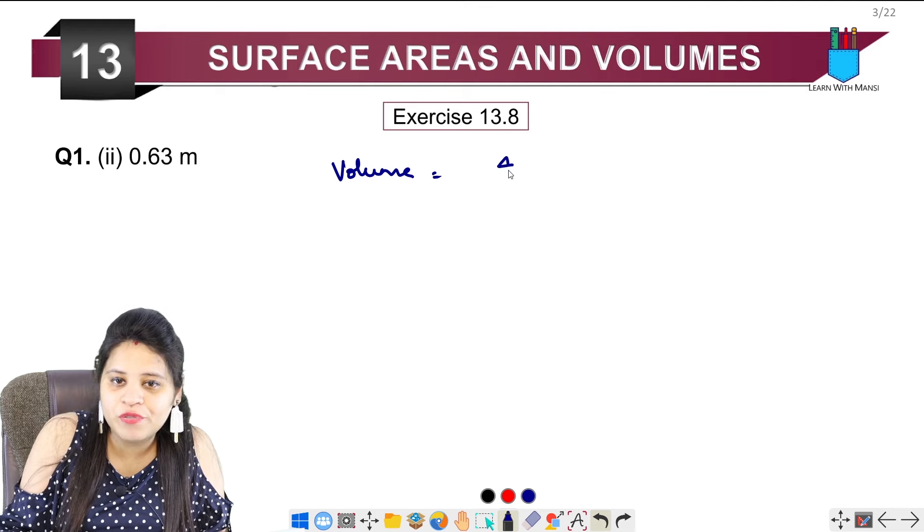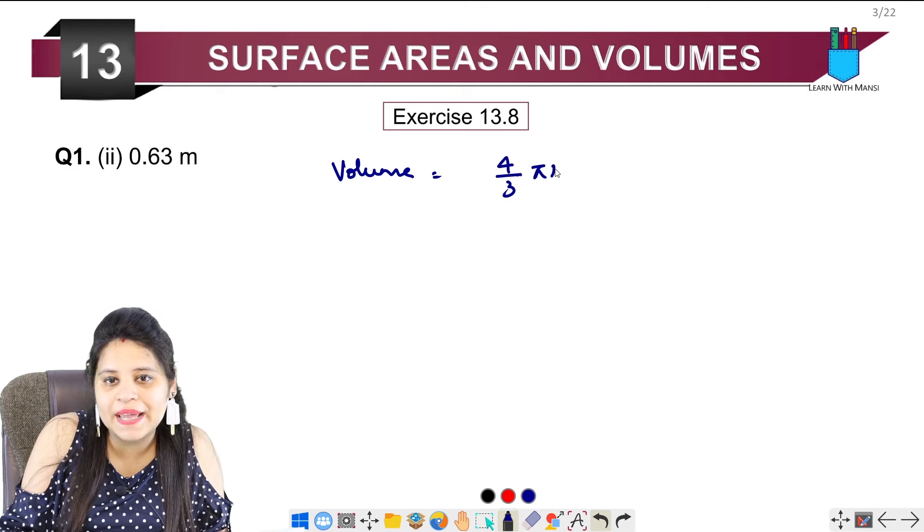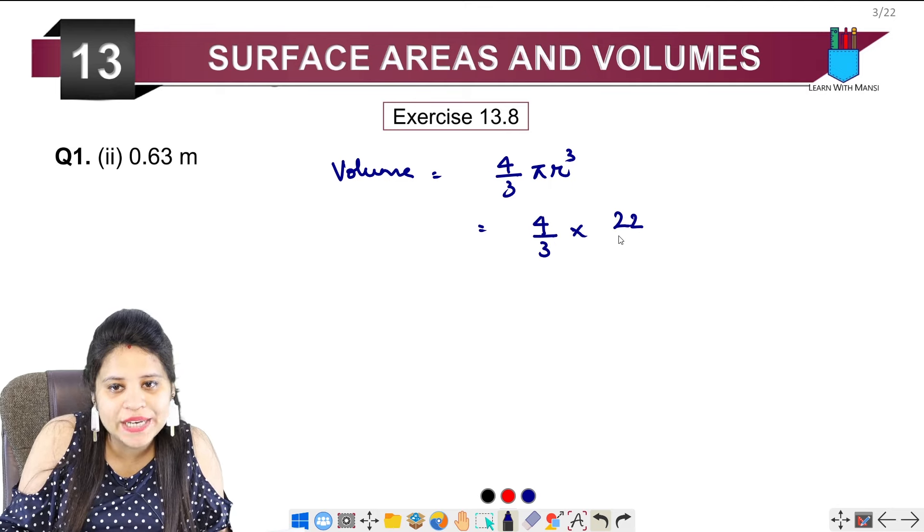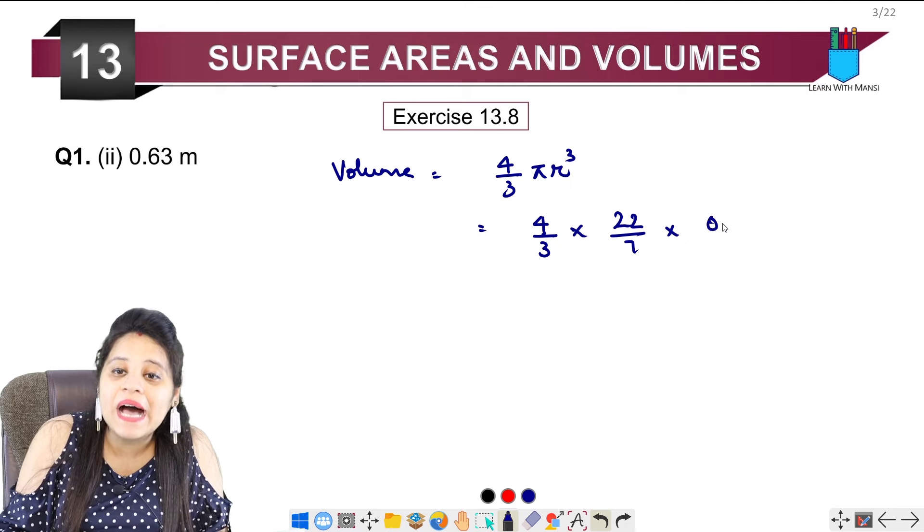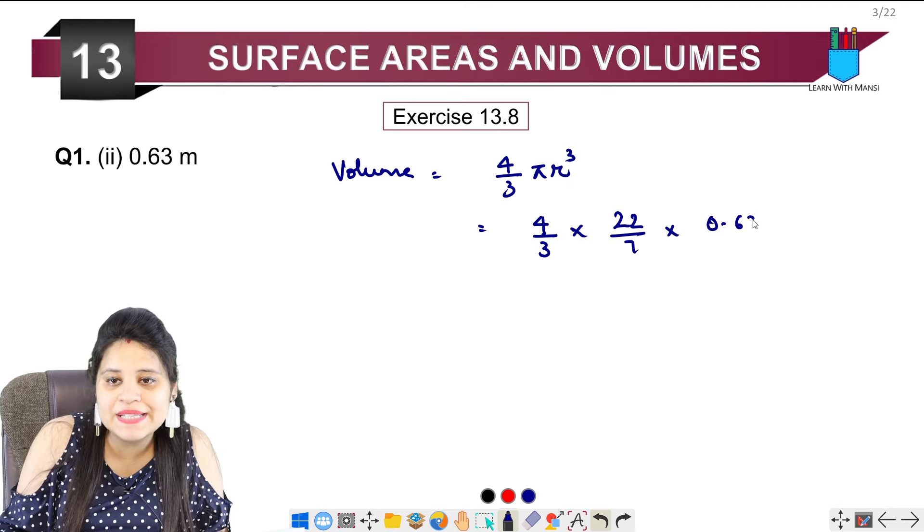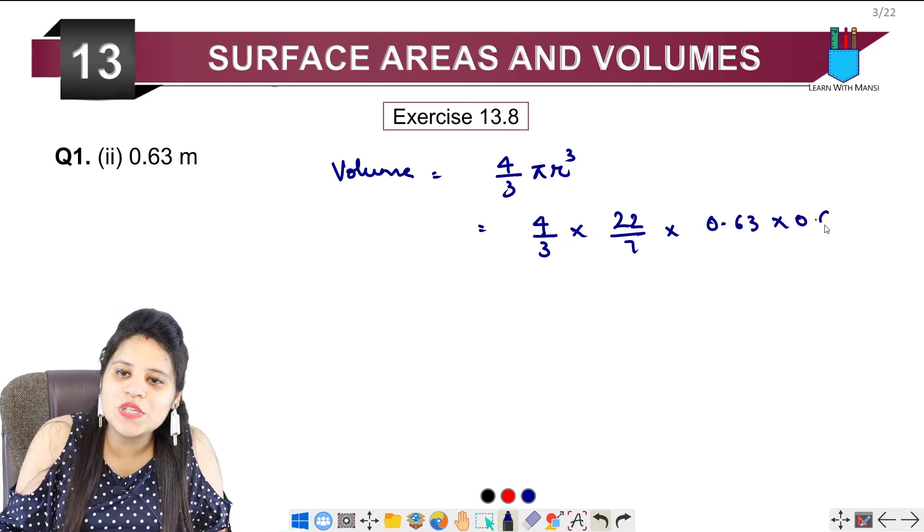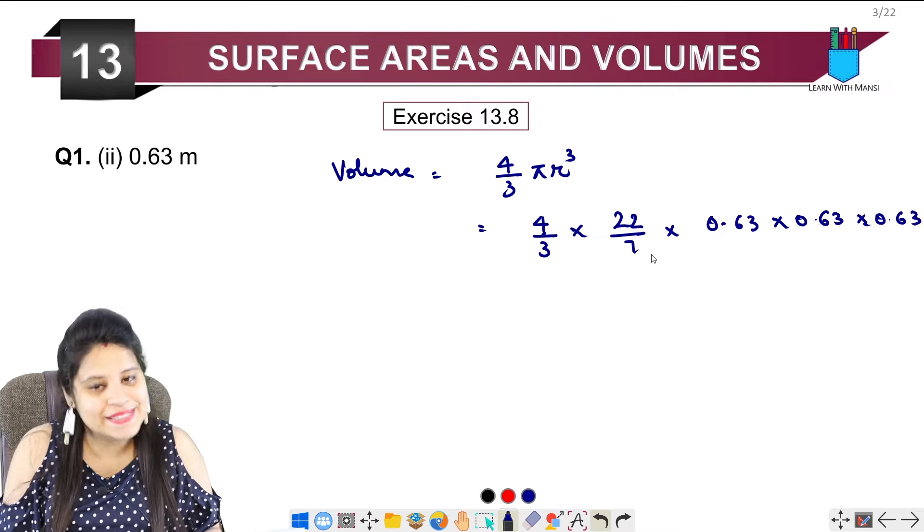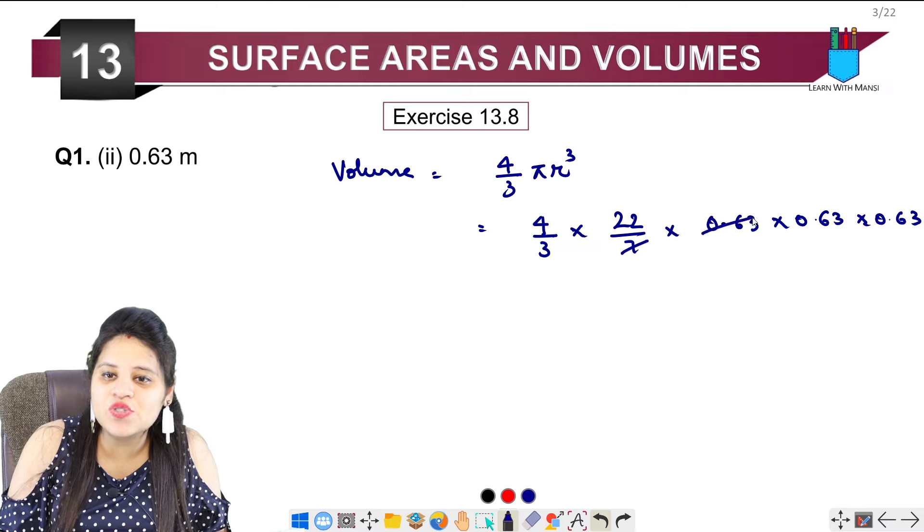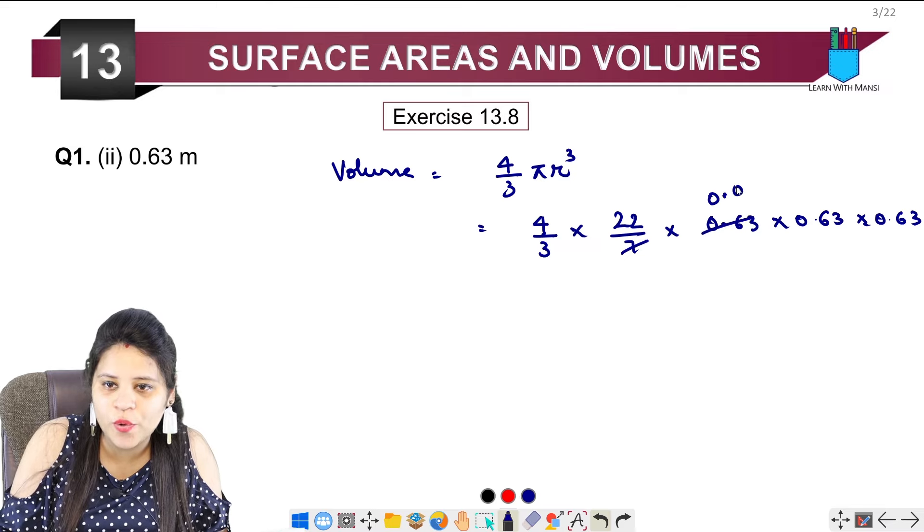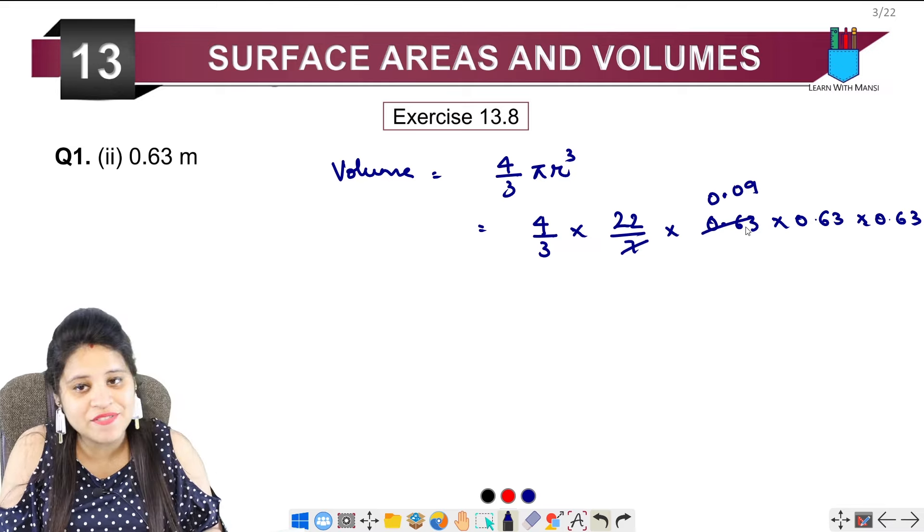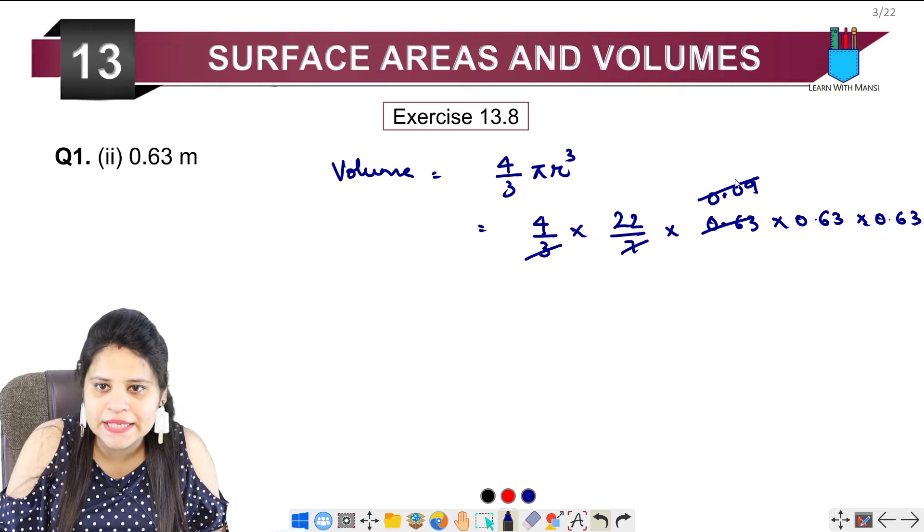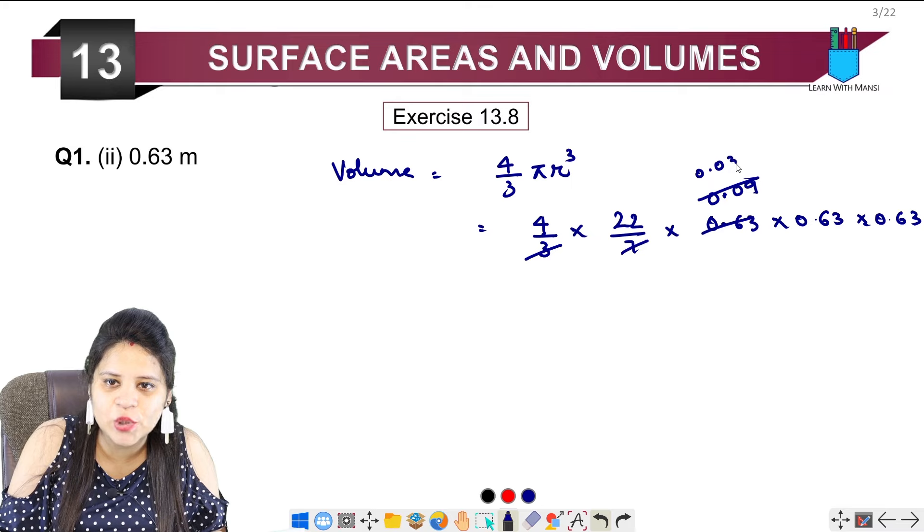Second part: 0.63 m. Which will be 4 upon 3, pi ki value 22 upon 7, r hai hamara 0.63 into 0.63 into 0.63. Again 7 se cut ho jayega to yah ho jayega 0.09 kyunki 9 7 se hote hai 63. Isi tarah yah 3 bhi cancel ho sakta hai, yah ho jayega 0.03.